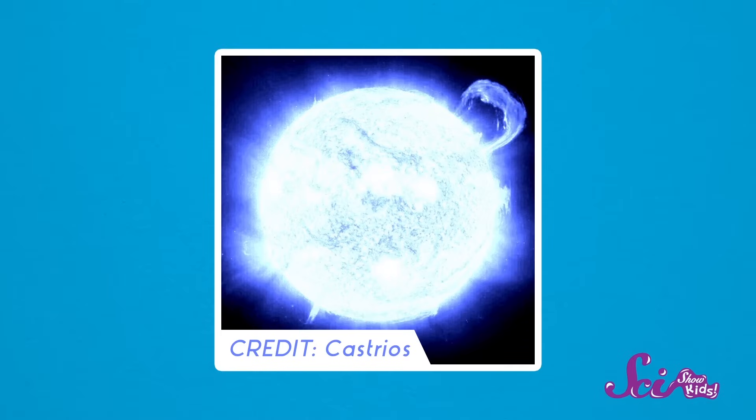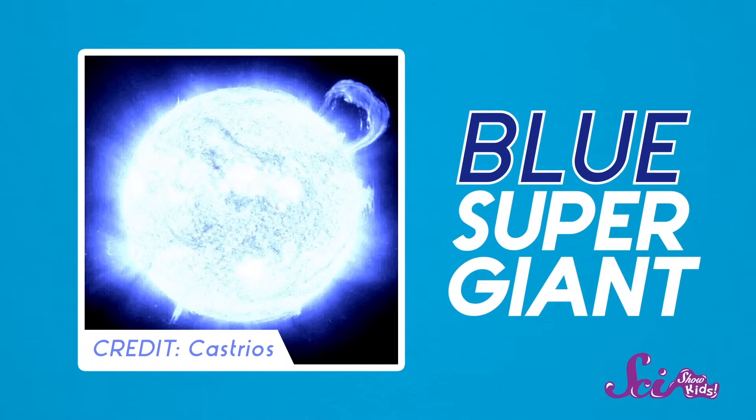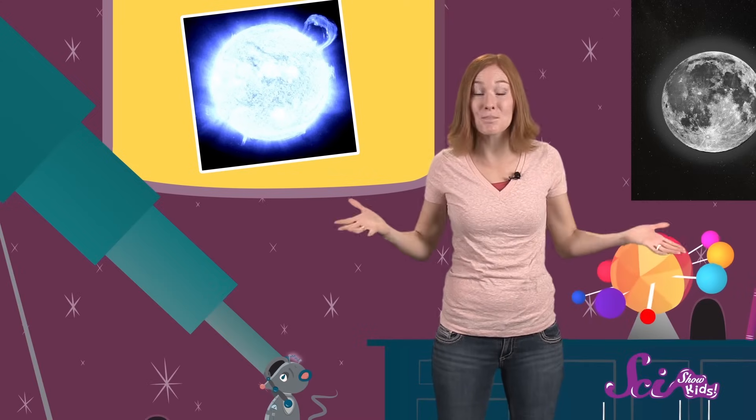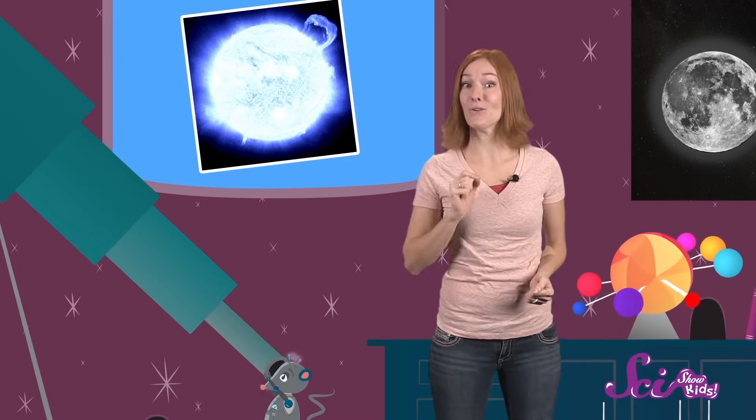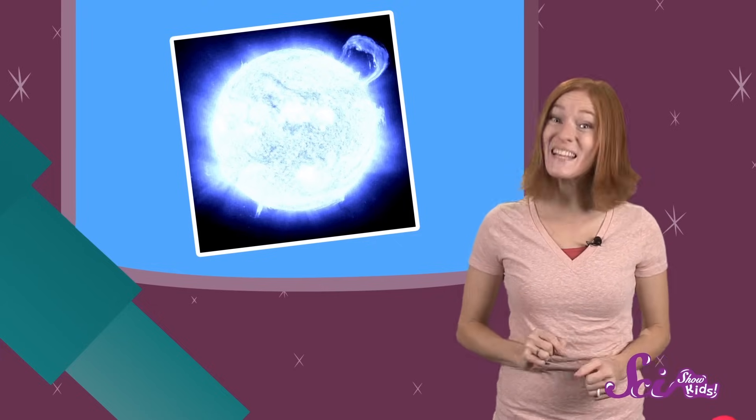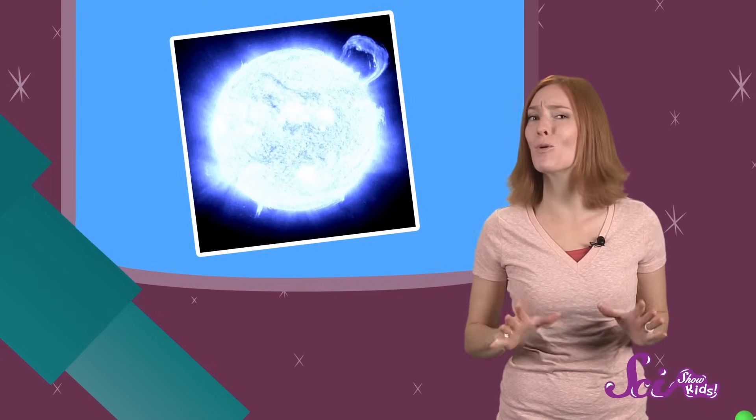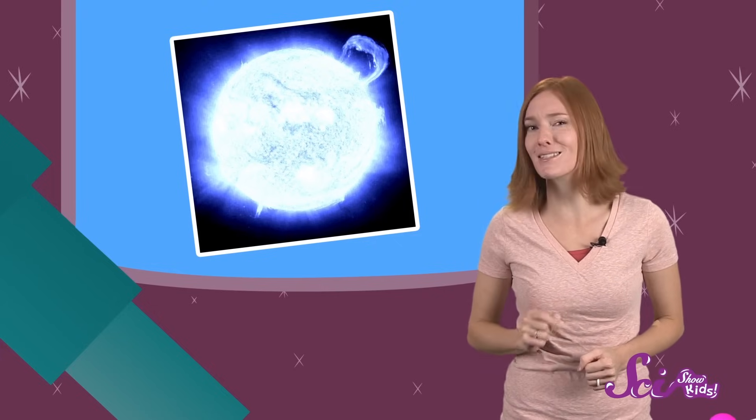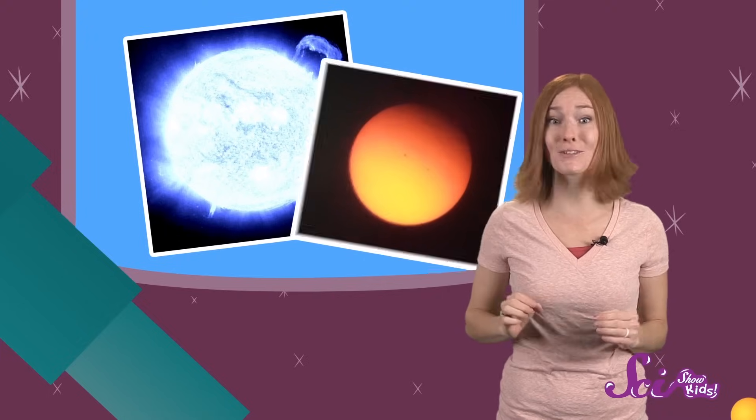Rigel is a good example of a kind of star called a blue supergiant. As you can guess from its name, it's blue instead of yellow, and it's enormous. Rigel is more than twice as hot as the Sun, and is also more than 70 times bigger. If you could put the Sun next to Rigel, our big old Sun would look like a tiny speck.